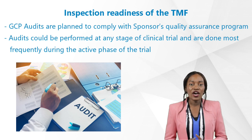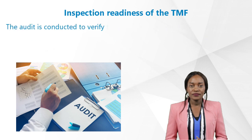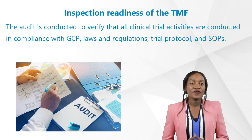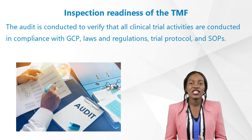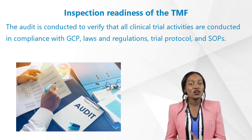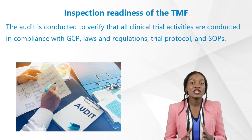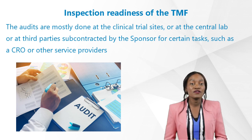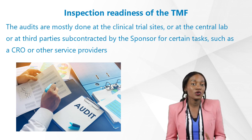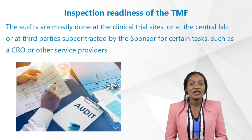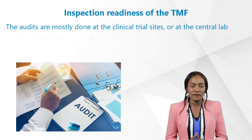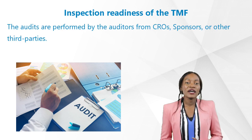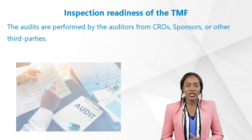GCP audits are planned to comply with the sponsor's quality assurance program. Audits can be performed at any stage of a clinical trial and are done most frequently during the active phase. The audit is conducted to verify that all clinical trial activities are conducted in compliance with GCP laws and regulations, trial protocol, and SOPs. Audits are mostly done at clinical trial sites, central labs, or third parties subcontracted by the sponsor, such as a CRO or eTMF system provider. Audits are performed by auditors from CROs, sponsors, or other third parties.